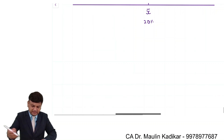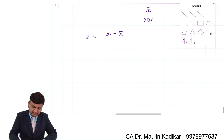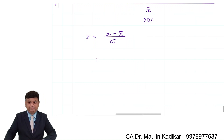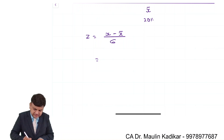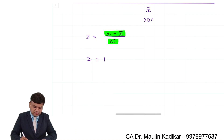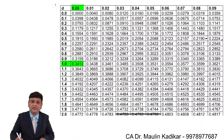There is a formula: Z = (X − X̄) / Standard Deviation. Now, if Z equals 1, then in the Z-table, the value for 1 has a reading of 0.3413.